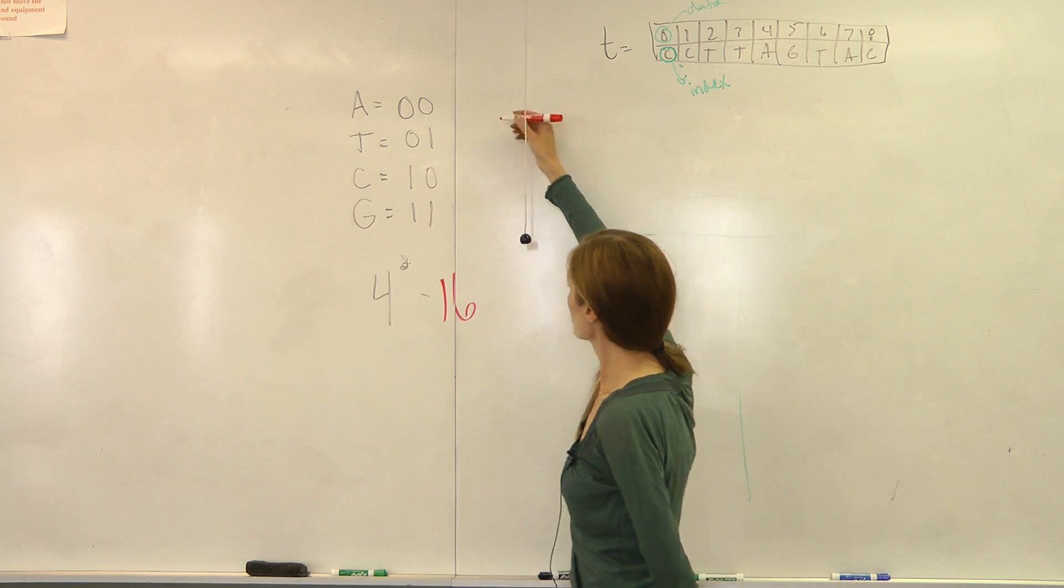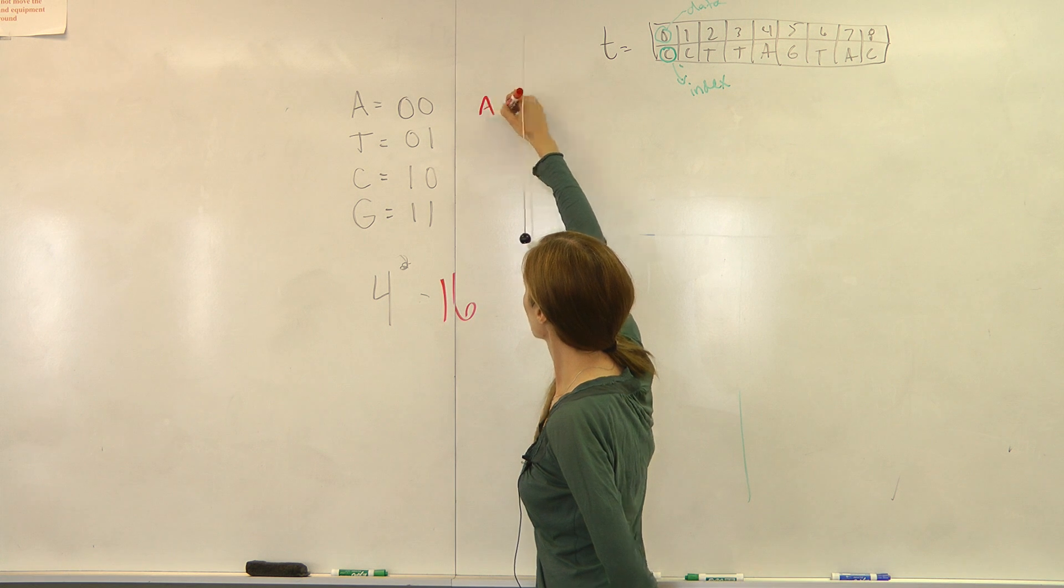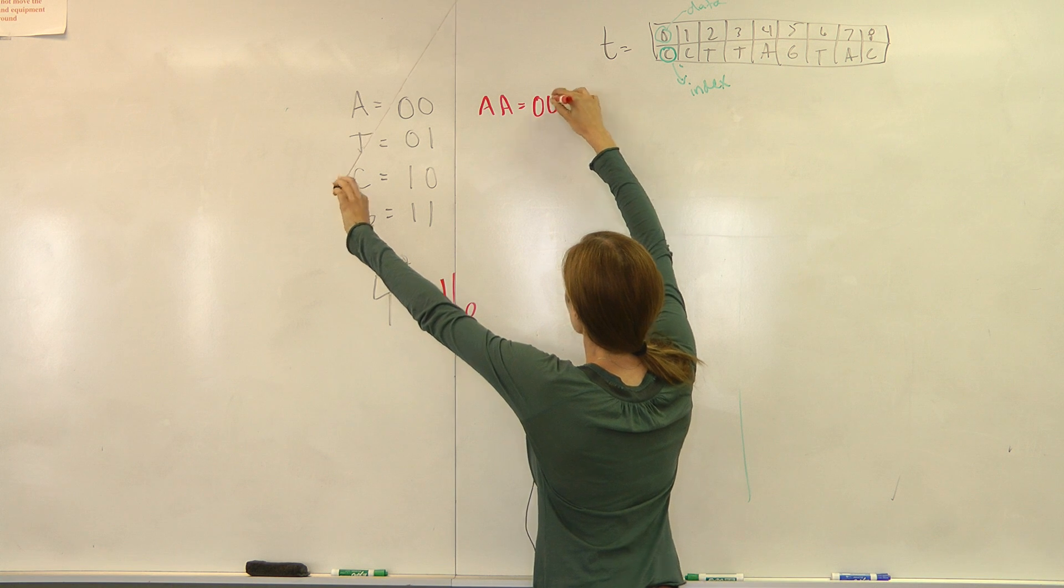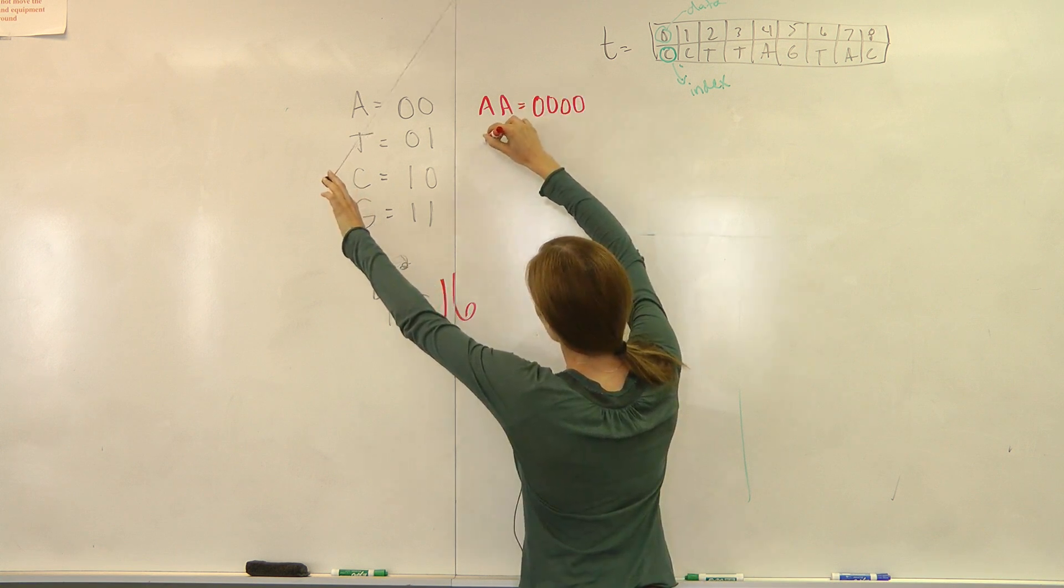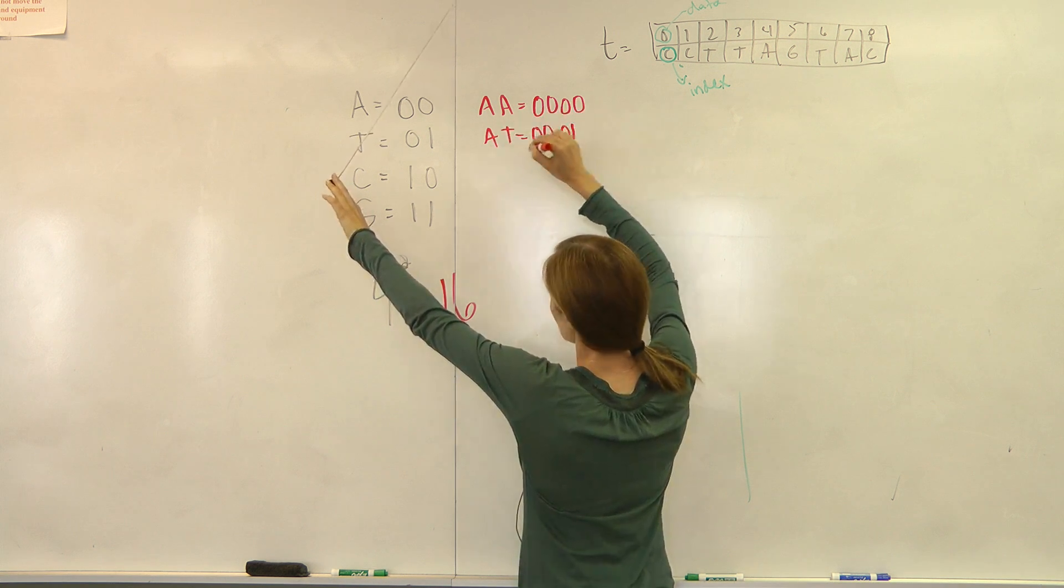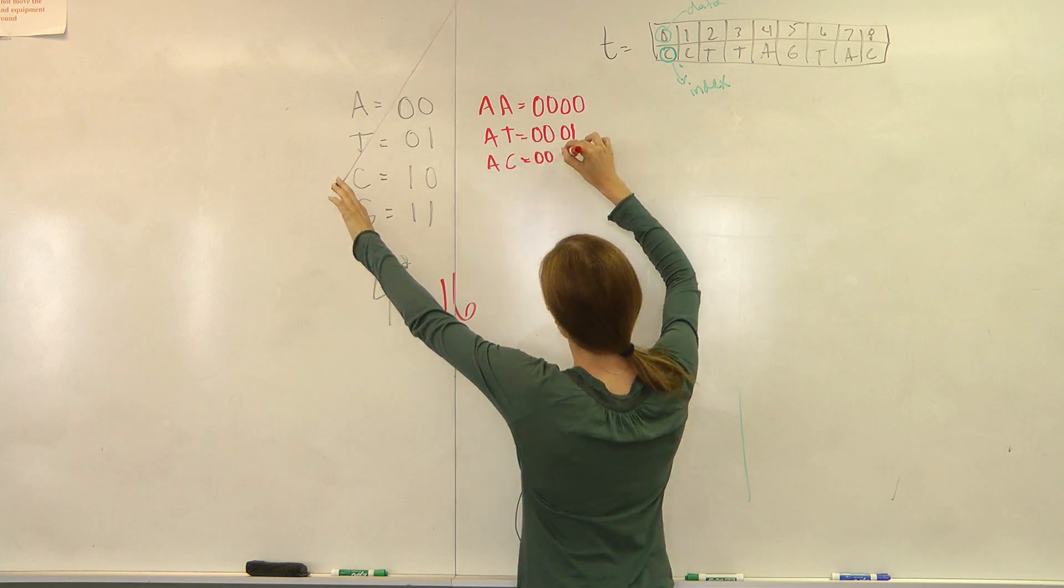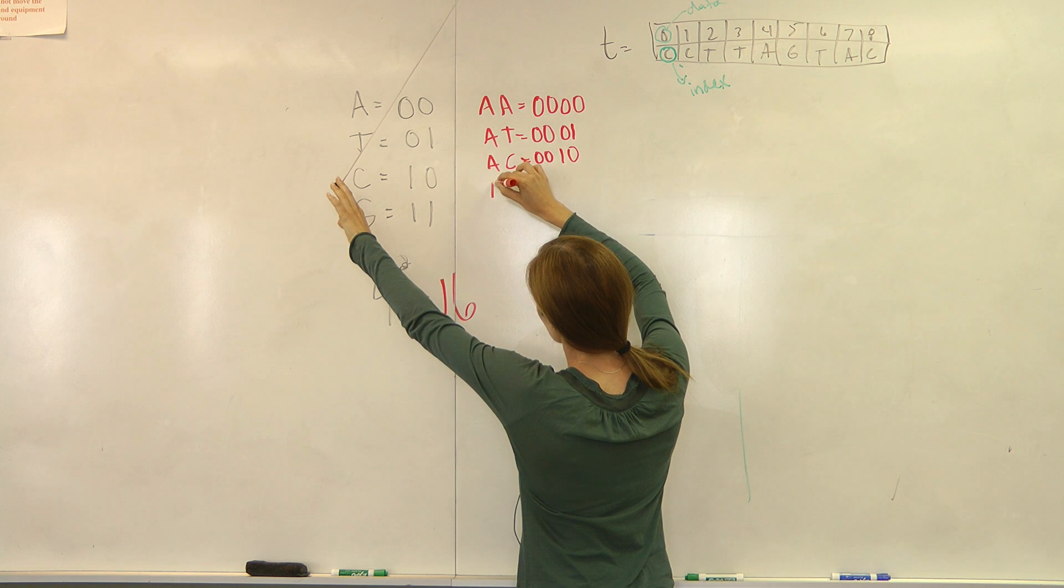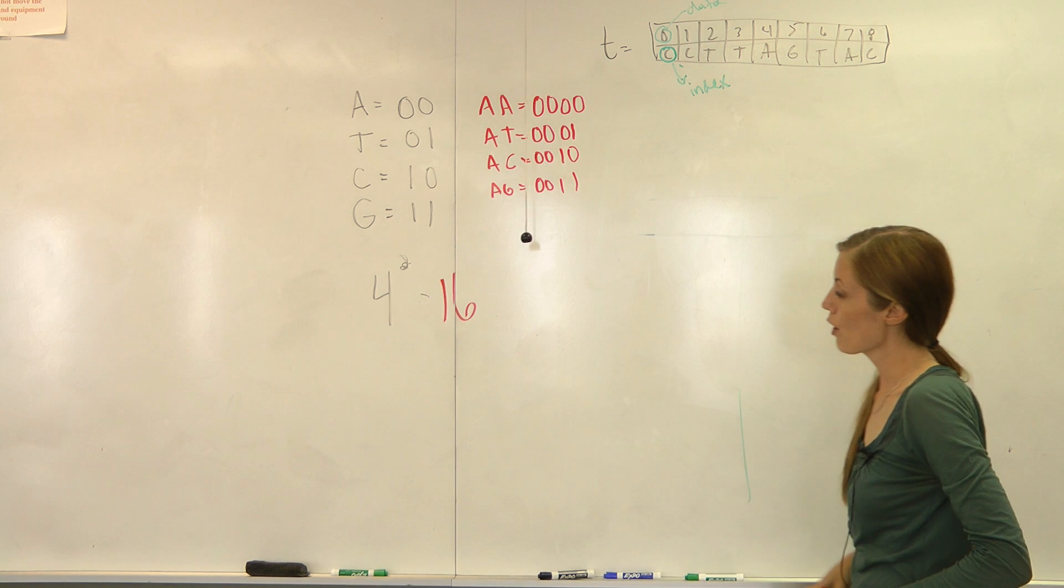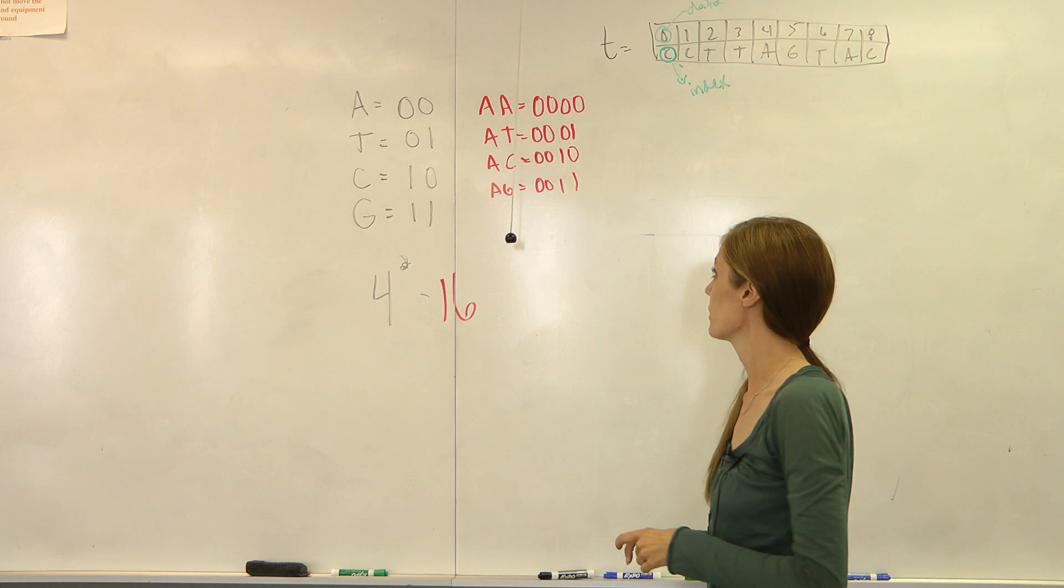And to turn a two-mer pattern into a binary number, you just apply the values in the key. So A was 00, so AA would be 0000. And for example, AT would be 00 because that's A and 01 because that's T. AC would be 00 and 10, and AG would be 0011. So those are four binary representations of four different two-mer nucleotides.